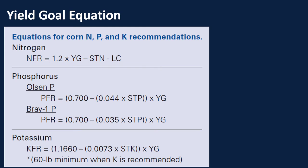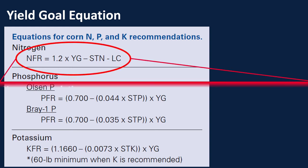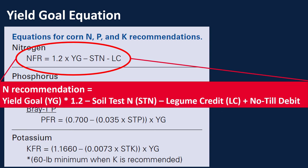When we look at the yield goal equation for most of our fertilizers — we're going to be talking about the nitrogen one today, but this goes for a lot of them — it's this equation right here. Our yield goal times the 1.2 coefficient, minus our soil test nitrogen value, minus our legume credit if we have one, and then adding a no-till debit if we're using no-till. That's the equation we use to determine our nitrogen fertilizer recommendations.